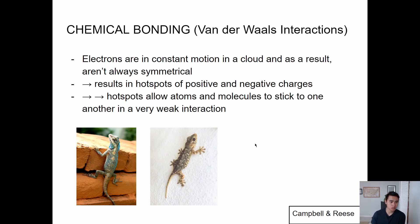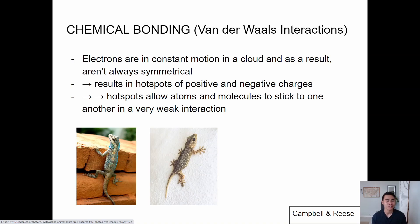Here's a pretty interesting one — this is a gecko sticking to a wall. They don't have suction cups on their hands or feet. Because the electrons are always moving, it creates an asymmetrical charge. Think about polar and nonpolar — it has a polar charge, resulting in hotspots of positive and negative charges. These allow it to stick to surfaces in a super weak interaction. That's why it can literally climb up walls.